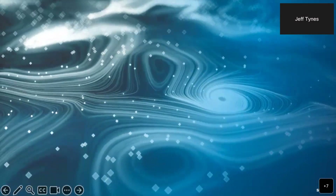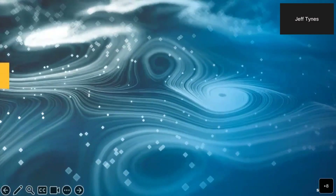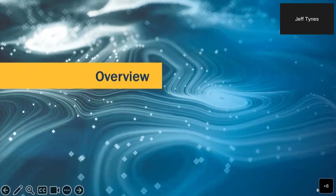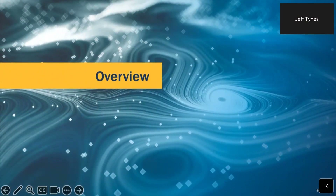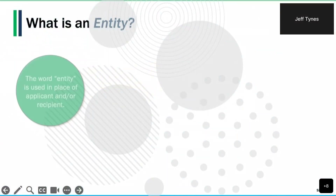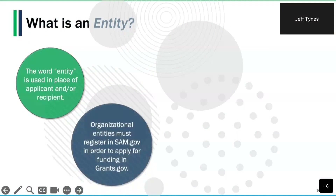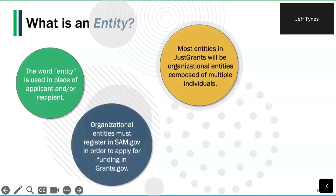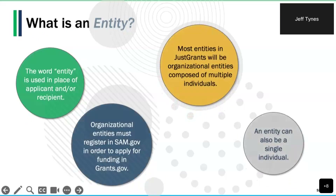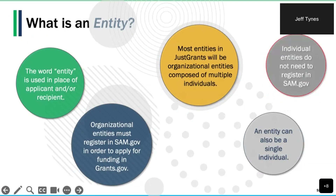Let's begin our discussions about entity management with an overview of what an entity is. The term entity refers to applicants and award recipients, and an entity has unique identifiers such as legal name, doing business as name, and one or more numeric or alphanumeric identifiers. In JustGrants, there are two distinct types: organizations and individuals. Most entities in JustGrants are considered organizational entities, such as nonprofits, American Indian tribes, state or local governments, and institutions of higher education.